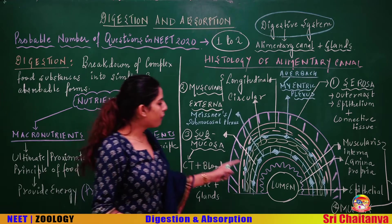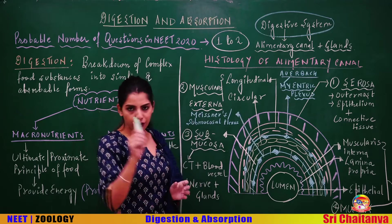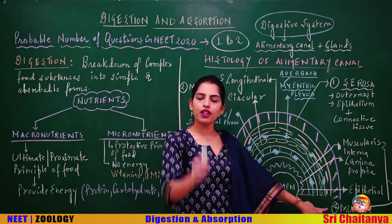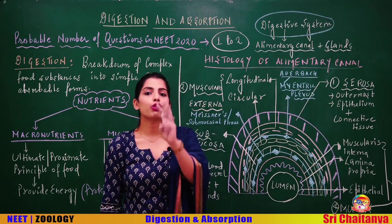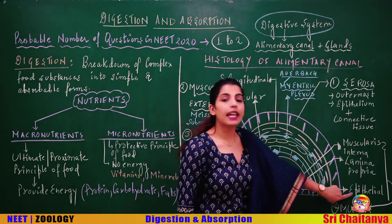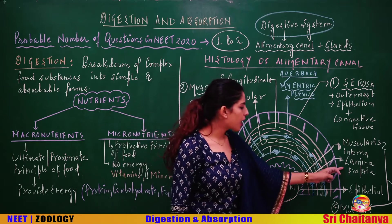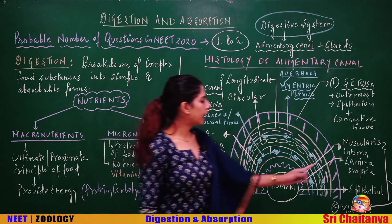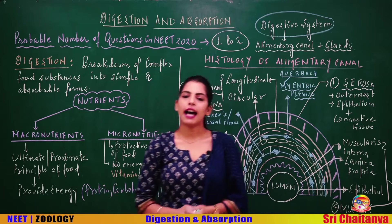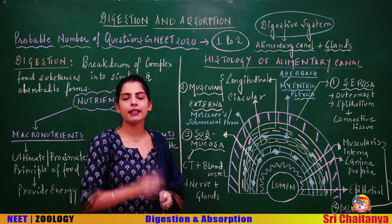The layer closest to the lumen is mucosa, which is further divided into three parts. The innermost layer closest to the lumen is the epithelial layer. Outside of the epithelial layer is the second layer of mucosa — connective tissue called lamina propria. And outside lamina propria is muscularis interna — smooth muscle. That is why the outer muscularis layer is called muscularis externa.